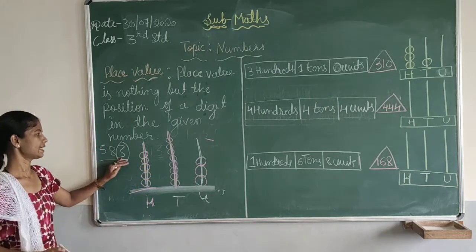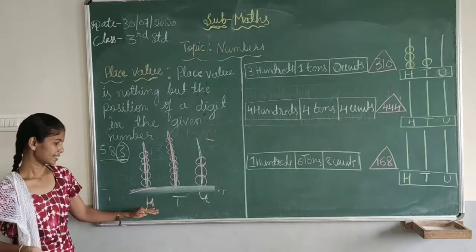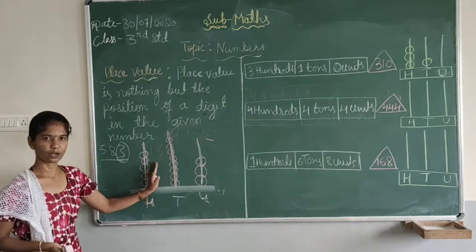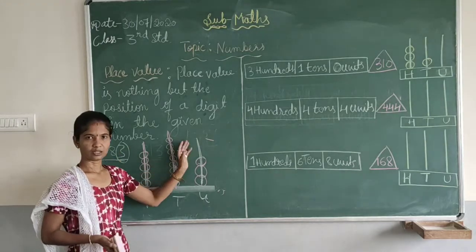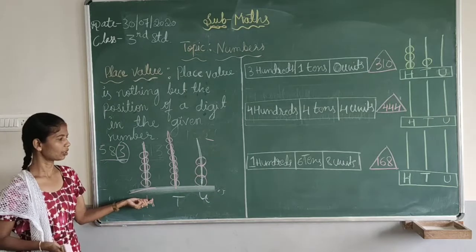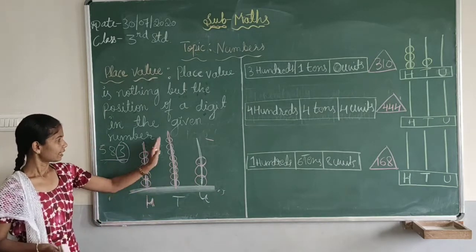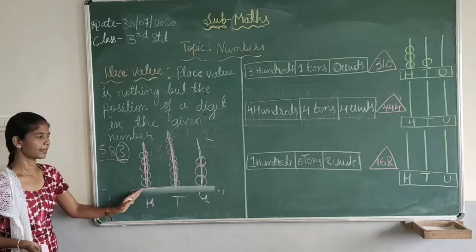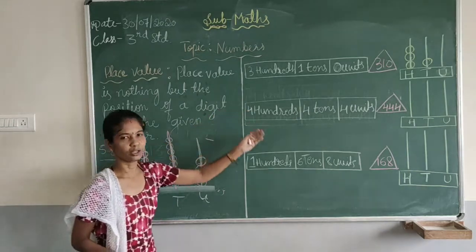Got it now? So we have taken 3 rods: units place, 10's place, and 100's place. According to this number we draw beads on the rods. Units place: 3. 10's place: 8. 100th place: 5.